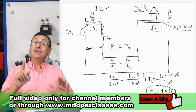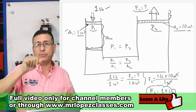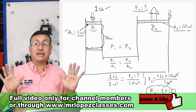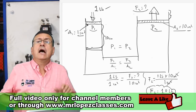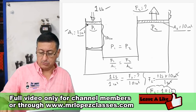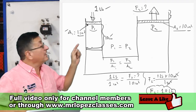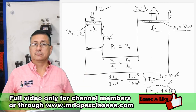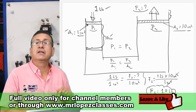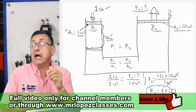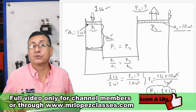Now, what happens with the movement of the pistons? In this example, we apply a force of one pound to piston number one and move it down 10 inches. We calculated that the output force on the second cylinder is 10 pounds. Now we are going to calculate how much distance the second cylinder moves.